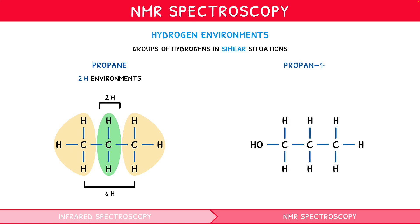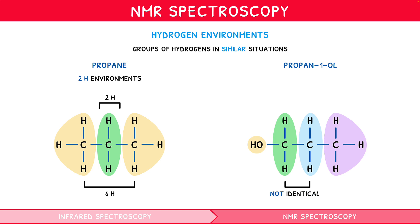Let's change this to propan-1-ol. It consists of four hydrogen groups: O–H, CH₂, CH₂, and CH₃. Since the leftmost CH₂ group is adjacent to an O–H and CH₂, whilst the rightmost is adjacent to a CH₂ and CH₃, they are not identical. Thus, propan-1-ol contains four hydrogen environments, containing one, two, two, and three hydrogens each.